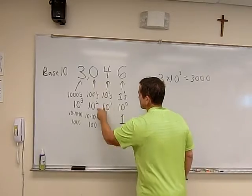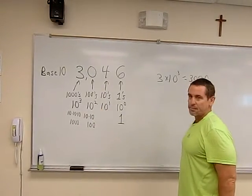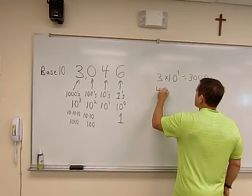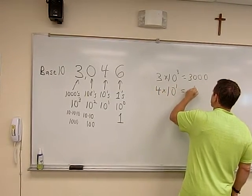And we've got zero times ten to the two, so we can skip that guy. And in this place we've got four times ten to the first. So that's equal to forty.